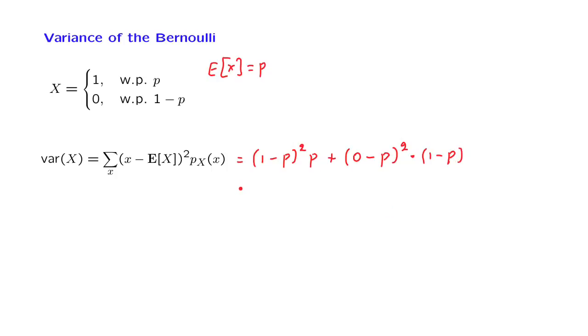And now we carry out some algebra. We expand the square here, 1 minus 2p plus p squared. And after we multiply with this factor of p, we obtain p minus 2p squared plus p to the third power.